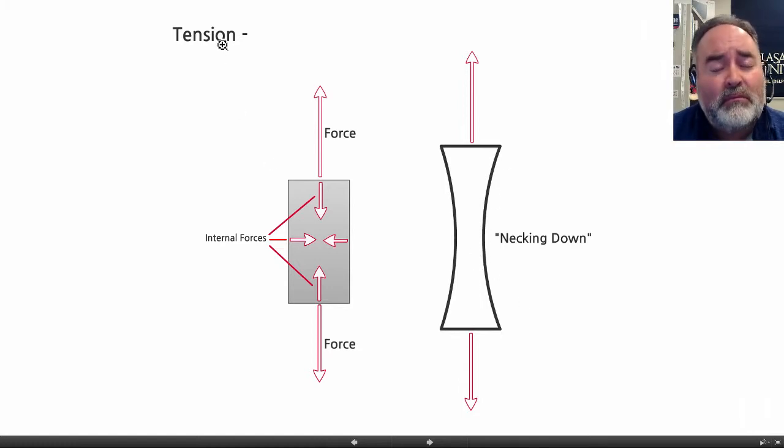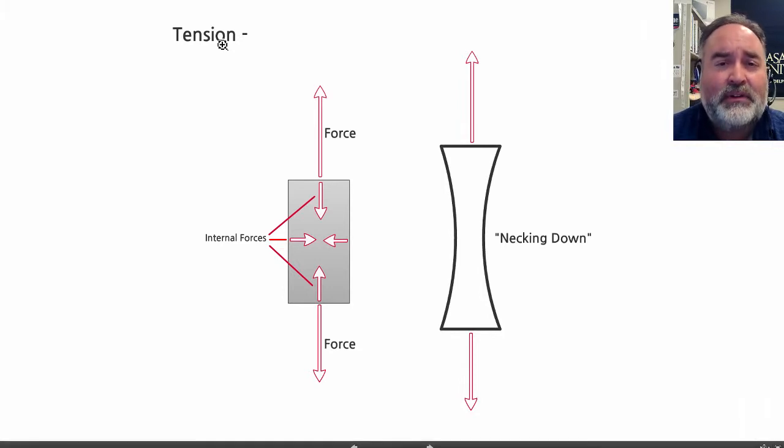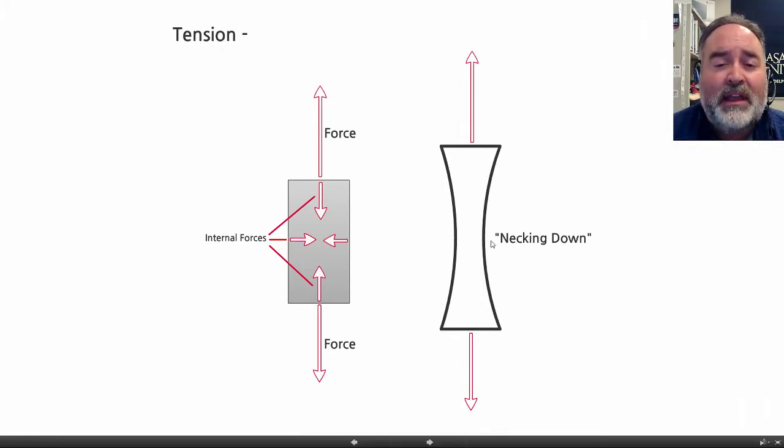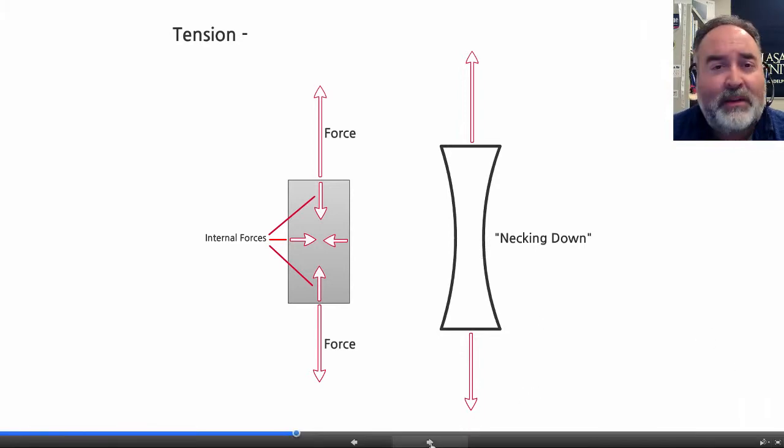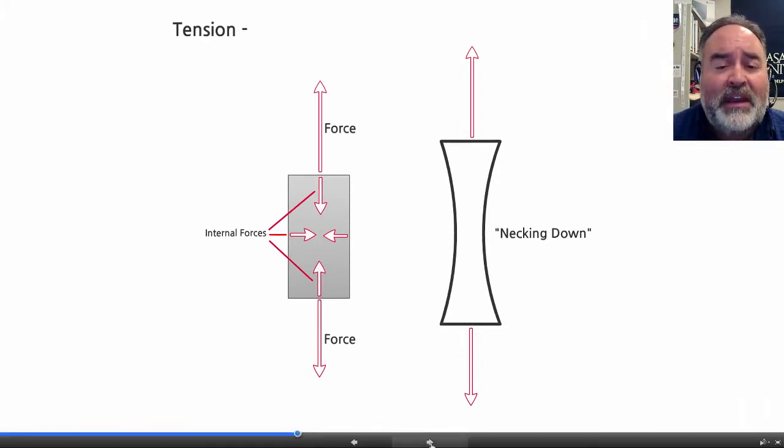So when you apply a tension force on a material and it happens to get skinny in the middle, the engineers are going to call it necking down.